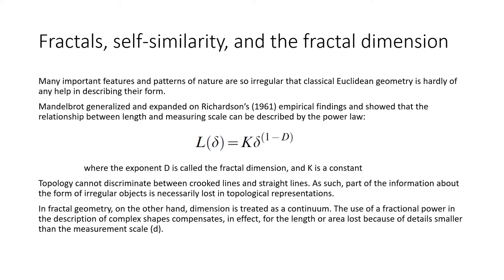Topology cannot discriminate between crooked lines and straight lines. As such, part of the information about the form of irregular objects is necessarily lost in topological representations. Thus, in fractal geometry, on the other hand, dimension is treated as a continuum. The use of fractal power in the description of complex shapes compensates for the effect of loss of length or area, because of all details smaller than the measurement scale D.